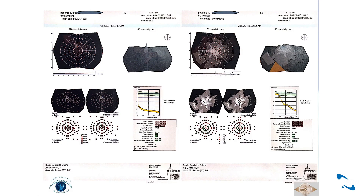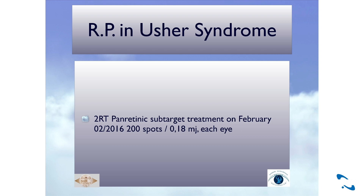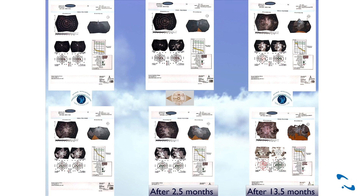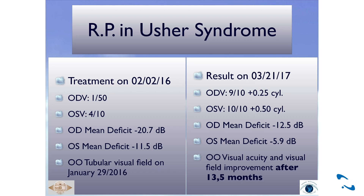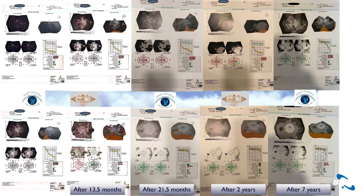Il campo visivo mostrava una parte nera molto estesa: a destra aveva solo un puntino per vedere, a sinistra vedeva qualcosa di più. Nel febbraio 2016 abbiamo fatto 200 spot su entrambi gli occhi. Dopo due mesi e mezzo c'era un iniziale miglioramento; dopo 13 mesi e mezzo un notevole miglioramento: da un cinquantesimo era passata a 9 decimi a destra e da 4 decimi a 10 decimi a sinistra, con forte riduzione del difetto del campo visivo. Rivista dopo due anni, c'era un lieve peggioramento al destro e ho rifatto il trattamento. Rivista due mesi fa dopo cinque anni, il destro era ancora migliorato, mentre il sinistro non ritrattato mostrava un leggero peggioramento.